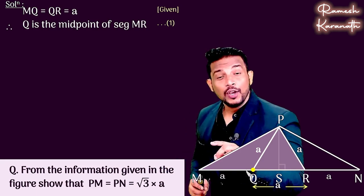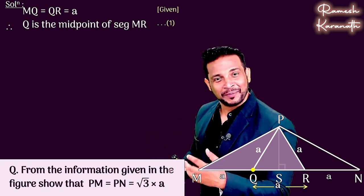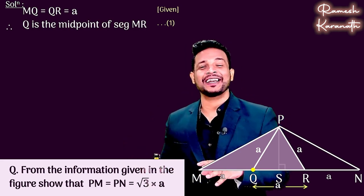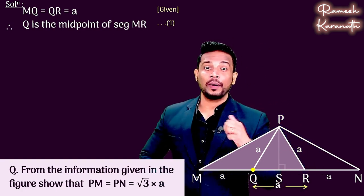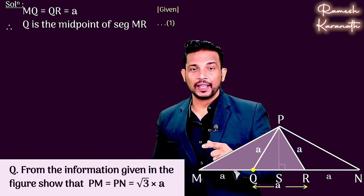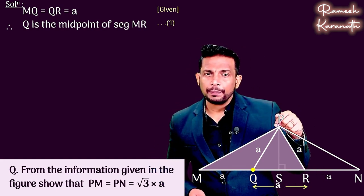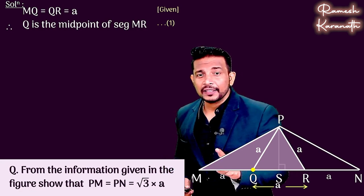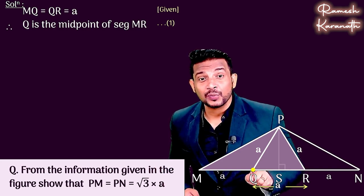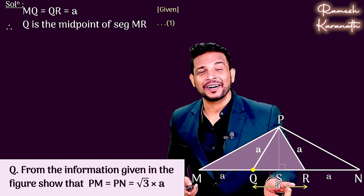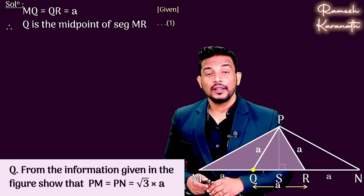Apollonius theorem, what is the result? I have already done this video. If you haven't seen it, then you must see it. I have linked it in the description. Then we can apply it. If we apply it, then we know that this triangle has a median PQ. So we apply the result: PM square plus PR square is equal to twice of PQ square plus twice of MQ square.